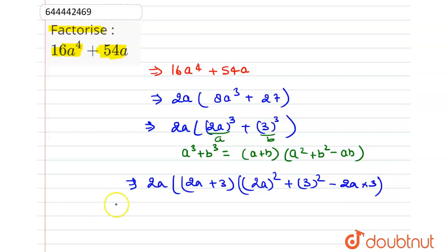Now we can simplify it as 2a, 2a plus 3 into 4a square plus 9 minus 6a.